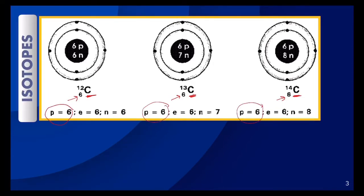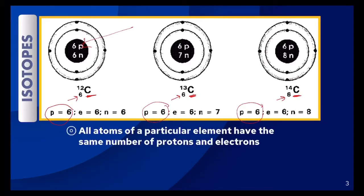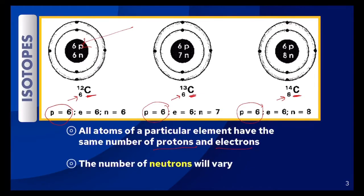All of these atoms have an atomic number of six, or six protons in their nucleus. Atoms of a particular element are neutral because they will have the same number of protons as they do electrons. You'll notice that the neutrons is what varies in number. The first picture has six neutrons, the second picture has seven neutrons, and the third picture has eight neutrons. So that's one characteristic of an isotope.